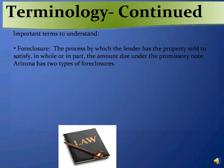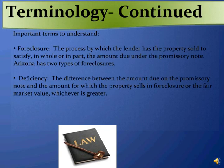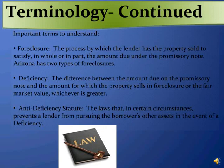Arizona allows two different types of foreclosures. A deficiency is the difference between the amount due on the promissory note and the amount for which the property sells in foreclosure or the fair market value of the property at the time of foreclosure, whichever is greater. Finally, an anti-deficiency statute is the law that in certain circumstances prevents a lender from pursuing the borrower's other assets in the event of a deficiency.